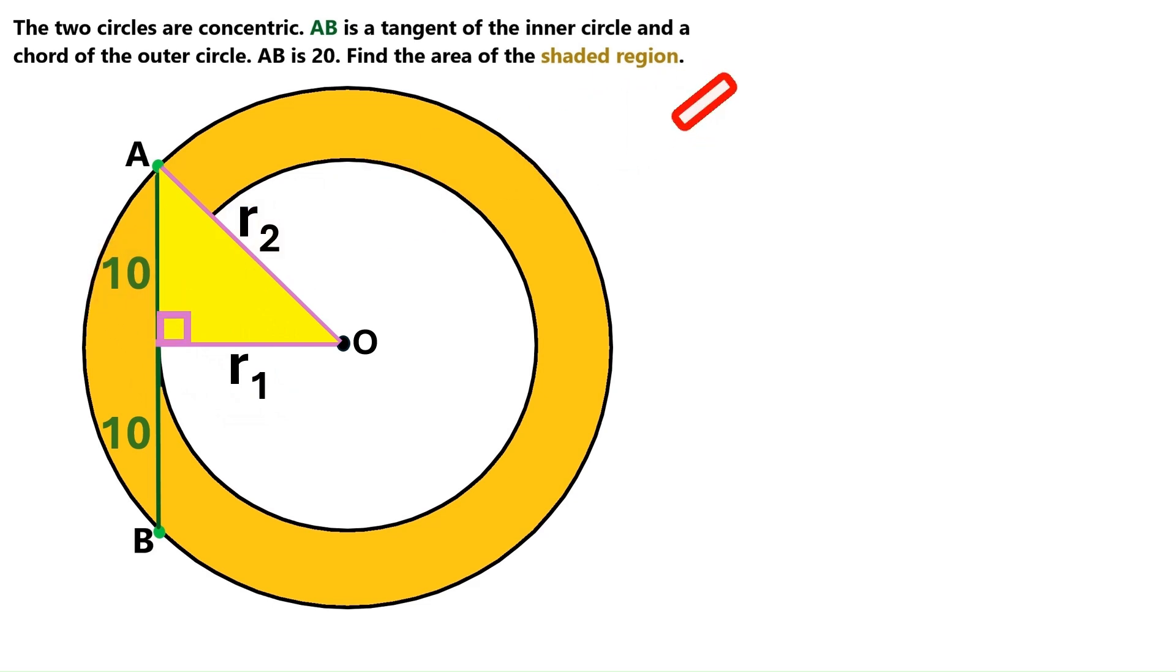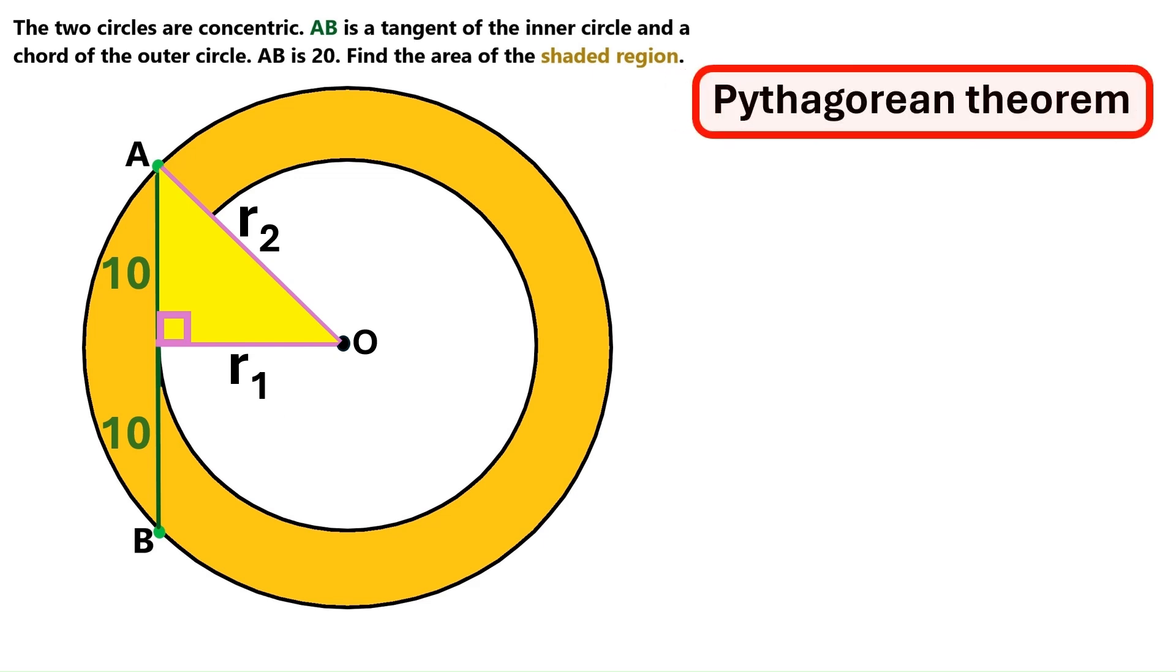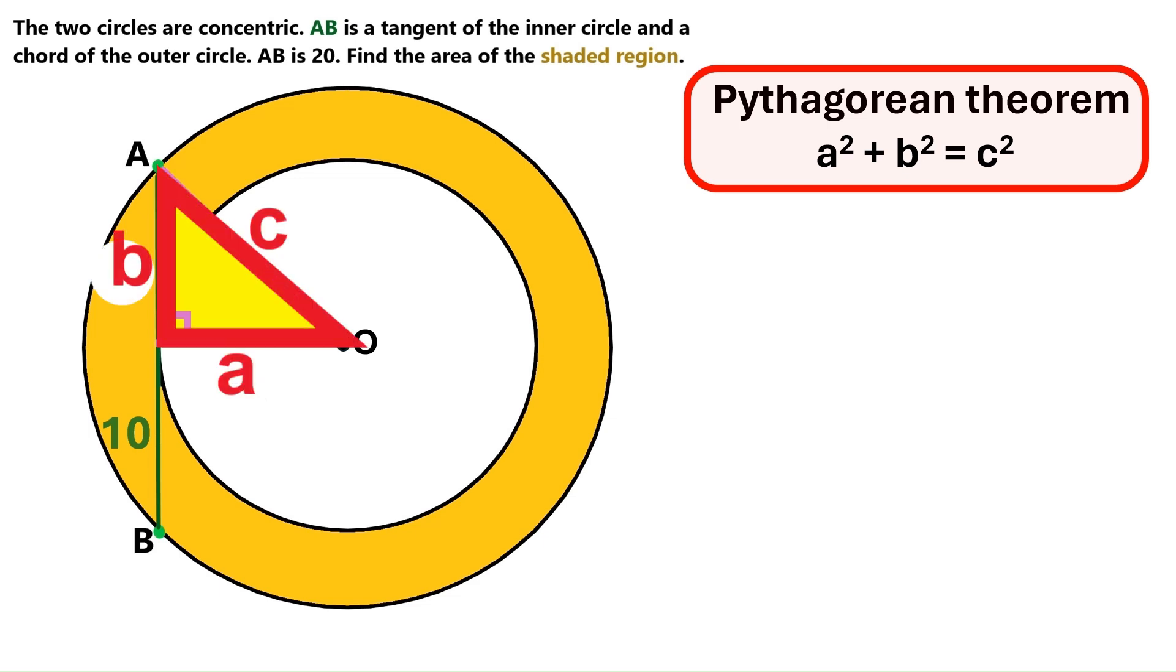And my son's going to remind us about the Pythagorean theorem now. Go ahead, son. Hello, people. The Pythagorean theorem works only with right triangles. According to the Pythagorean theorem, A squared plus B squared equals C squared. And can you explain what that means? Yes. The sum of the squares of the shorter sides equals the square of the long side. Thanks for the assistance, son.